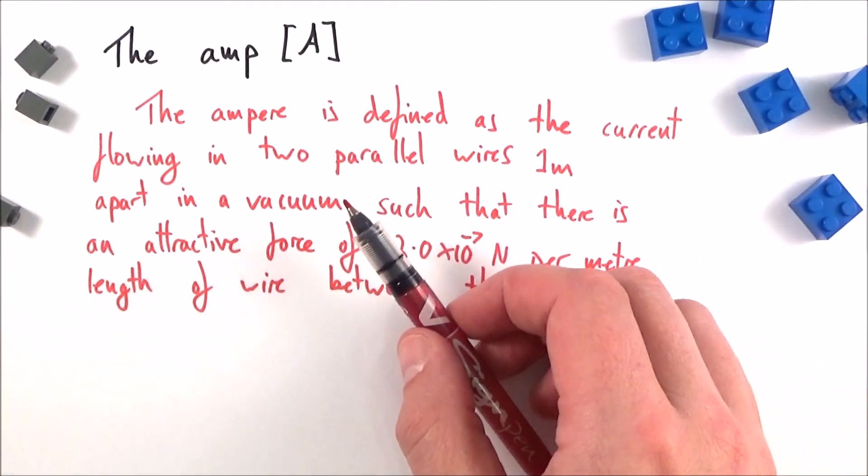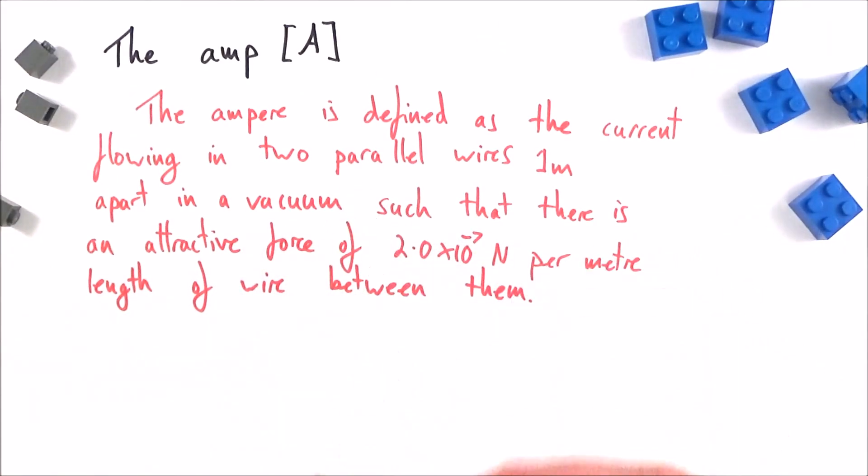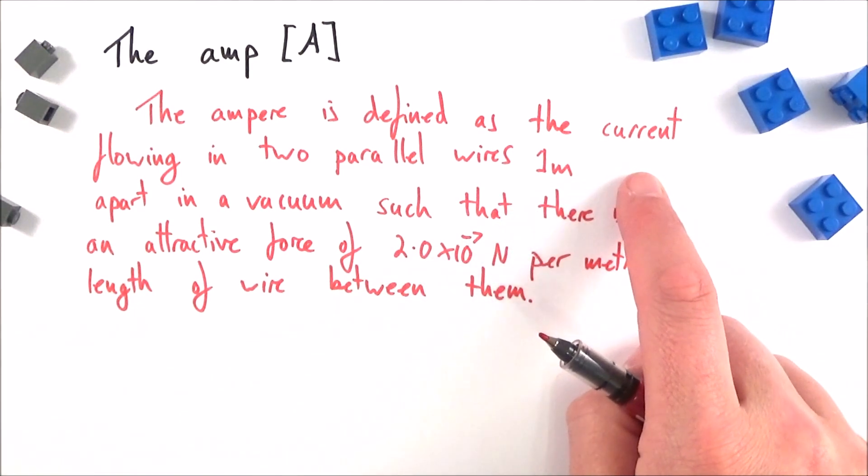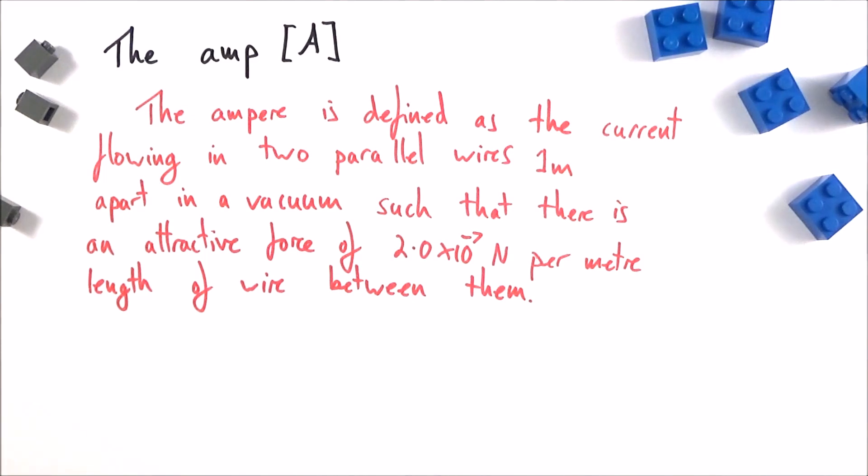This all leads on to the definition of what the ampere is. Because it's one of the seven base units, it has this kind of real fundamental definition. It's the current flowing in two parallel wires which are one meter apart in a vacuum such that there's an attractive force of 2×10^-7 newtons per meter of length between them. Now that is a massive mouthful and it doesn't really mean anything.